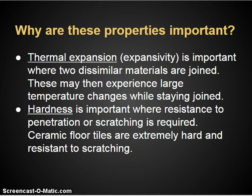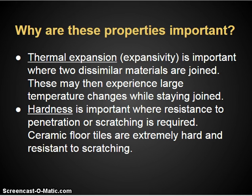Thermal expansion is important because dissimilar materials joined together expand at different rates. This property is used to advantage in thermostats using a bimetallic strip — two strips of different metals bonded together where one metal expands faster than the other, causing the strip to curl and uncurl, or straighten out as it's heated and cooled. Hardness is important where you need something resistant to penetration or scratching, like floor tiles — any flooring needs really good hardness or it will scratch up badly.